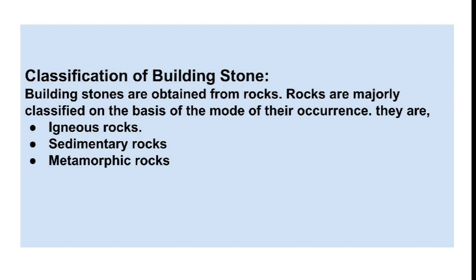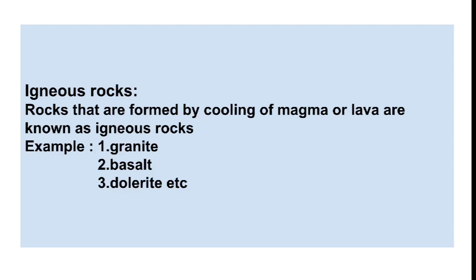Generally, building stones are obtained from rocks. Rocks are majorly classified as igneous rocks, sedimentary rocks, and metamorphic rocks. These rocks are classified based on their occurrence. Igneous rocks are rocks that are formed by the cooling of magma or lava.